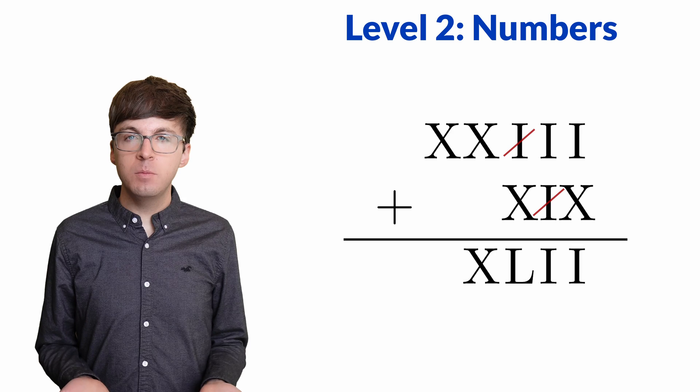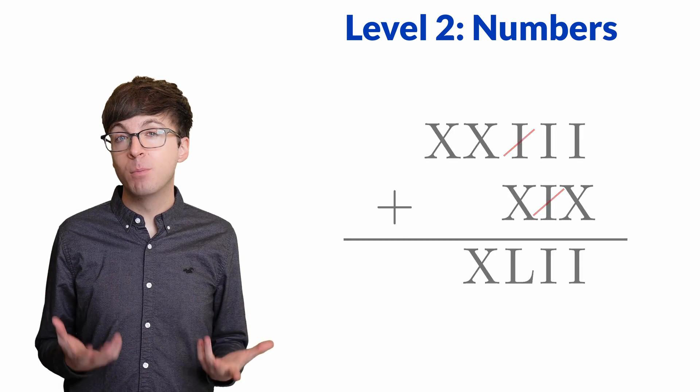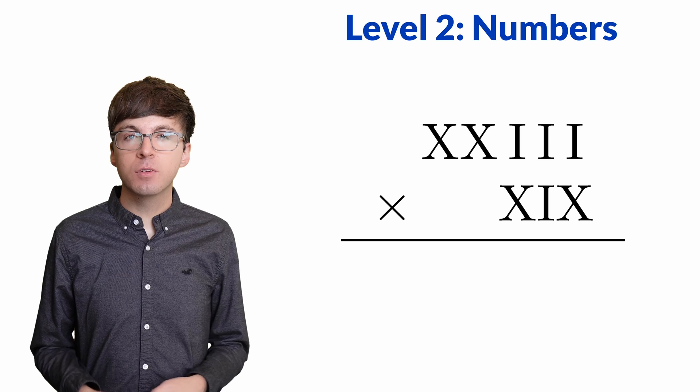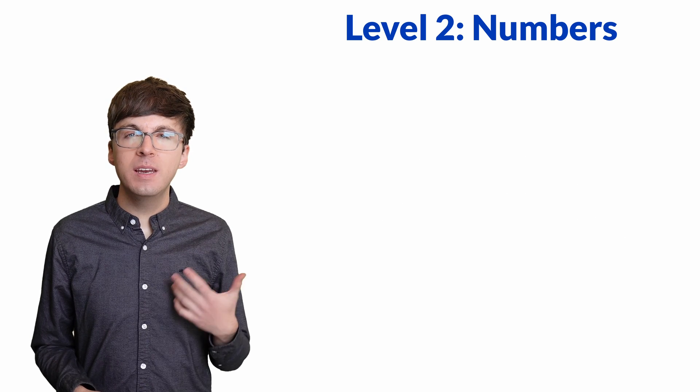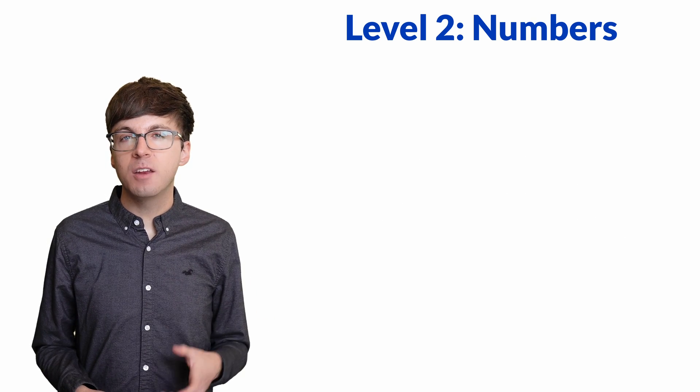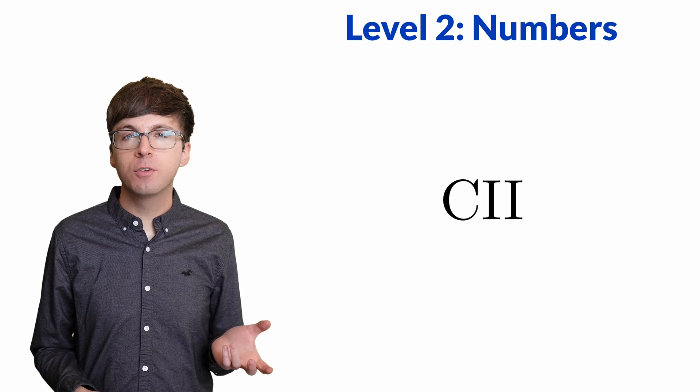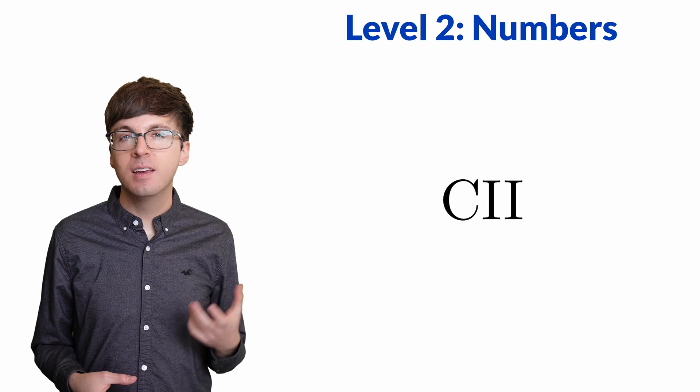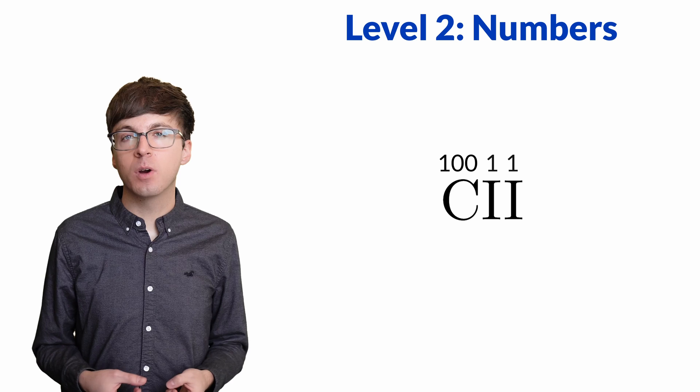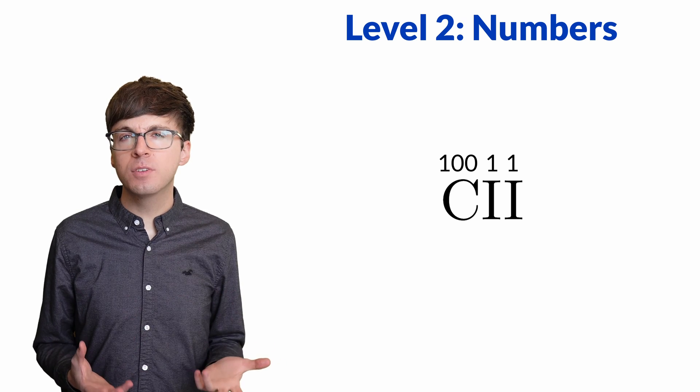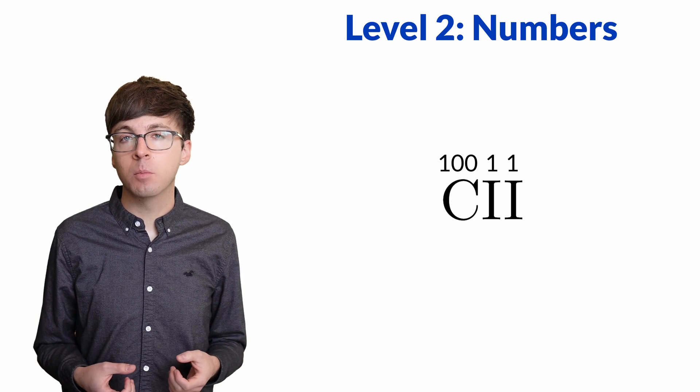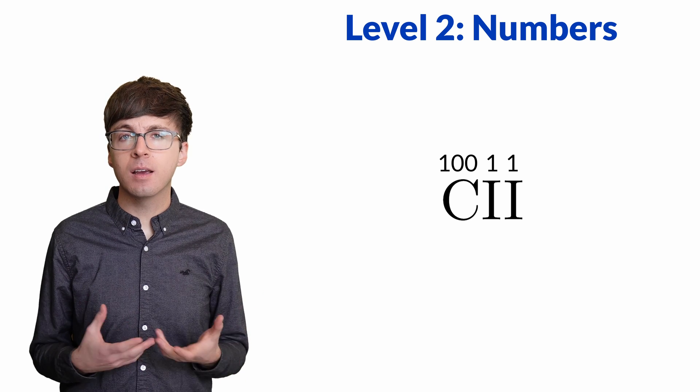This might not seem too bad, but now try multiplying these two numbers. In order to have a positional number system like we use now, we need a placeholder symbol. In Roman numerals, we write 102 as CII. C is 100 and I is 1. There's no placeholder to indicate that there are no tens in the number. We just write the C and the I's next to each other.